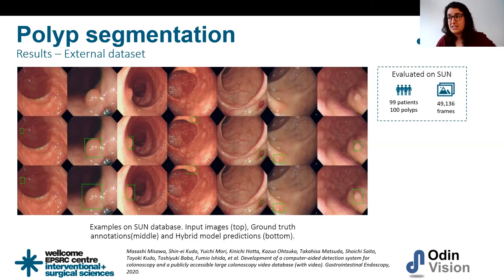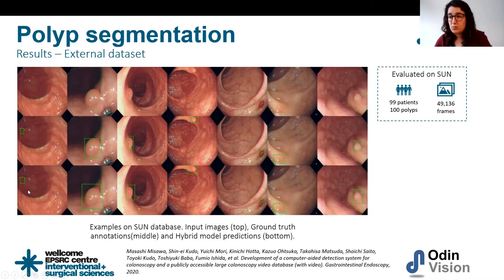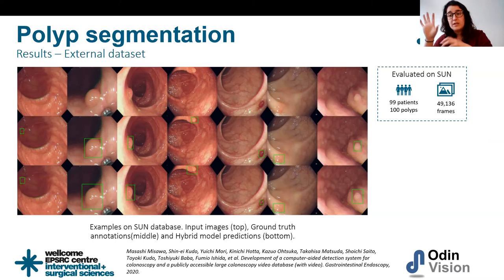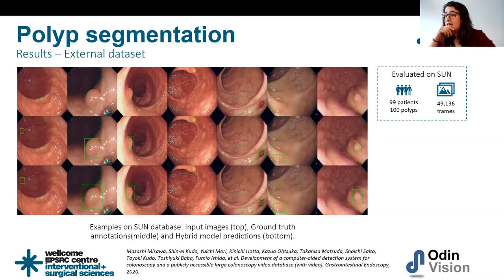We also tested on an external dataset — the SUN dataset — to verify generalization. The results were comparable to our internal data, showing good generalizability. Our results were also comparable to those from the original paper trained on similar data, which is good news. The hybrid model was consistently better than the baseline.